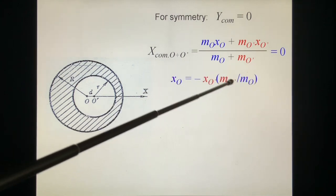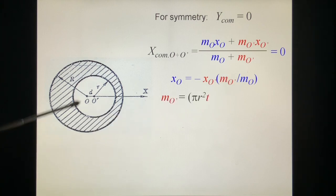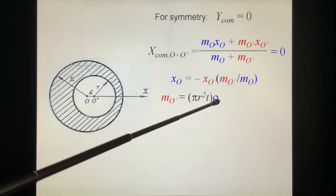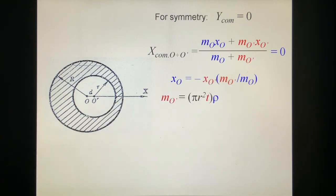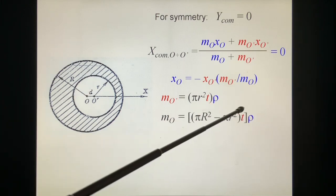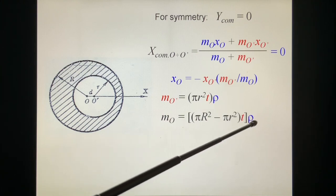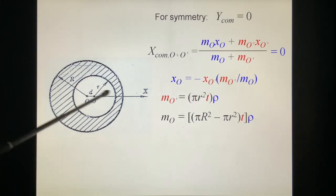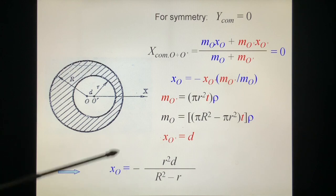Their center of mass is M_O x_O plus M_O' x_O' over M_O plus M_O'. Where is it? If we put them together, we know the center of mass should be there, equal to zero. Then we know the numerator should be zero, and the position X_O equals minus M_O' x_O' over M_O. First, M_O' is pi small r squared times thickness T times density rho. And M_O is pi big R squared minus pi small r squared times T times rho. And x_O' is d.